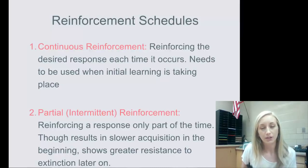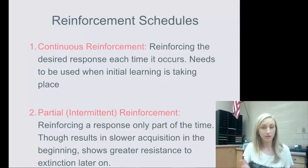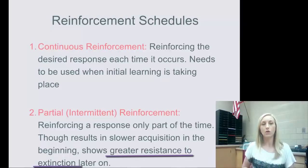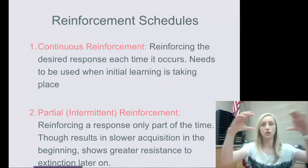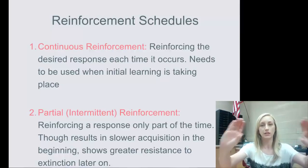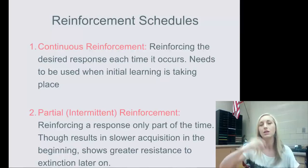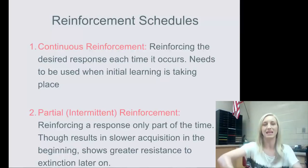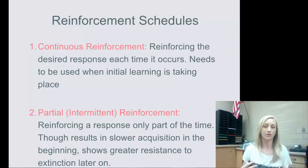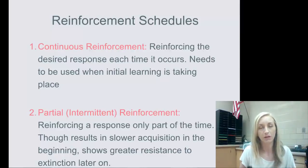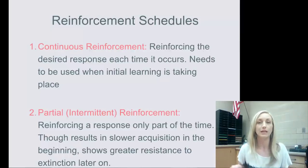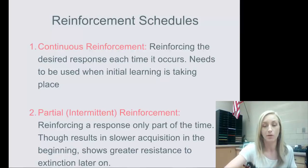Partial reinforcement results in slower acquisition in the beginning, but shows greater resistance to extinction later on. So using a combination of both: when you're first conditioning your subject, use continuous reinforcement to get the behavior well stamped in the organism. But then, once they are conditioned, switch to partial or intermittent reinforcement to create greater resistance to extinction so the behavior doesn't go away.